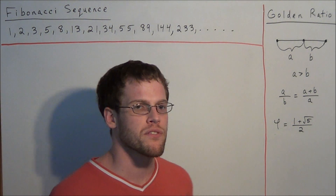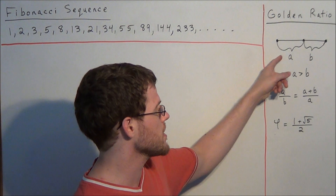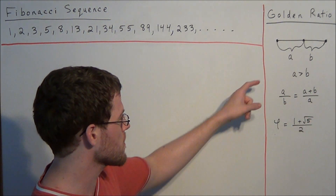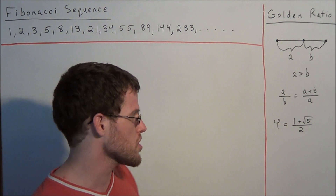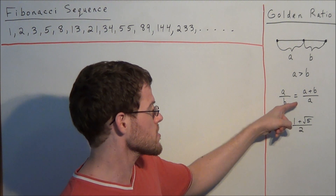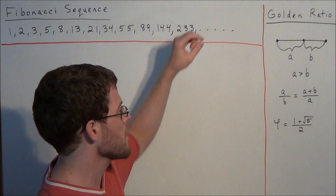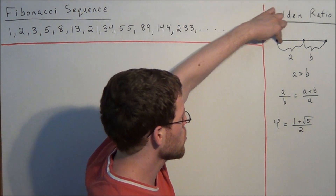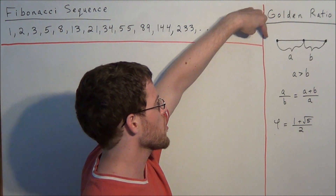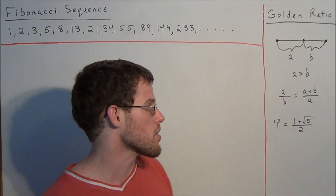In the first video in the series, we defined the golden ratio by considering two line segments A and B, where line segment A is longer than line segment B. We said that segments A and B uphold the golden ratio if the ratio of A to B is equal to the ratio of A plus B to A — that is, the ratio of the longer segment to the shorter segment equals the ratio of the entire segment to the longer segment.